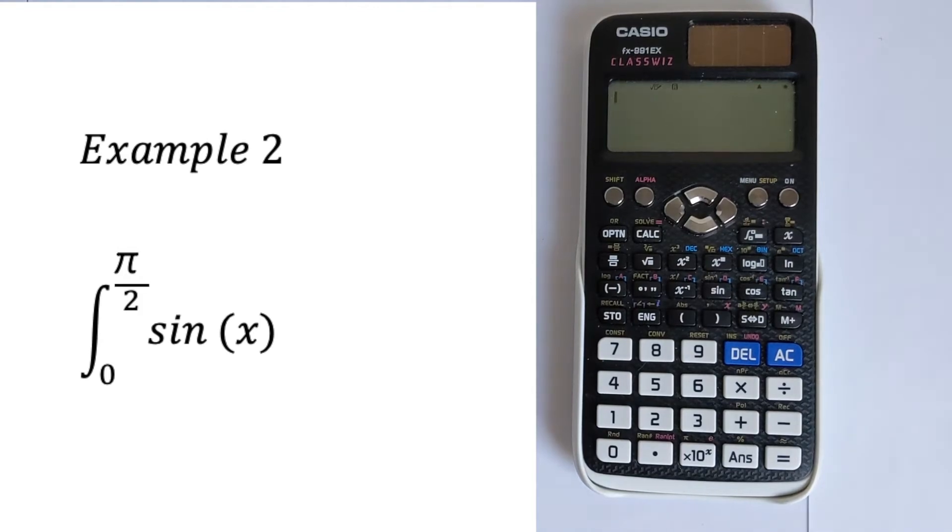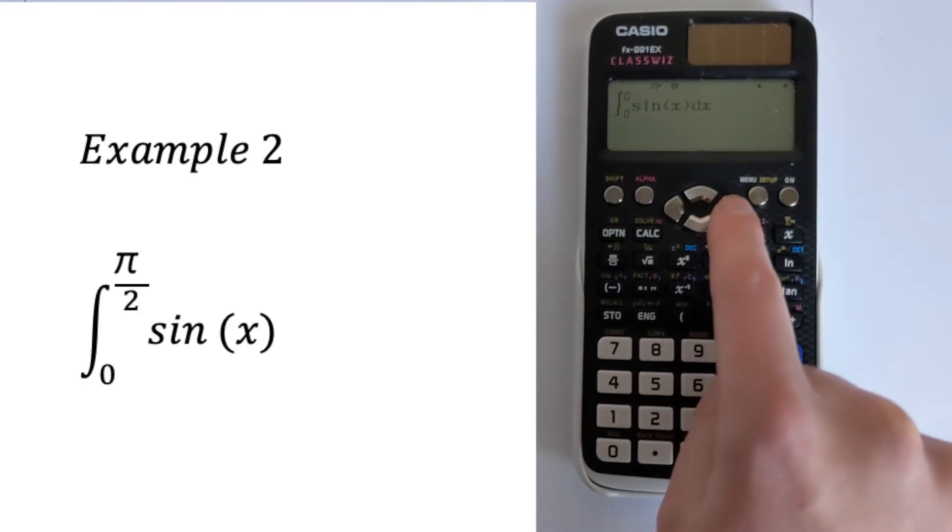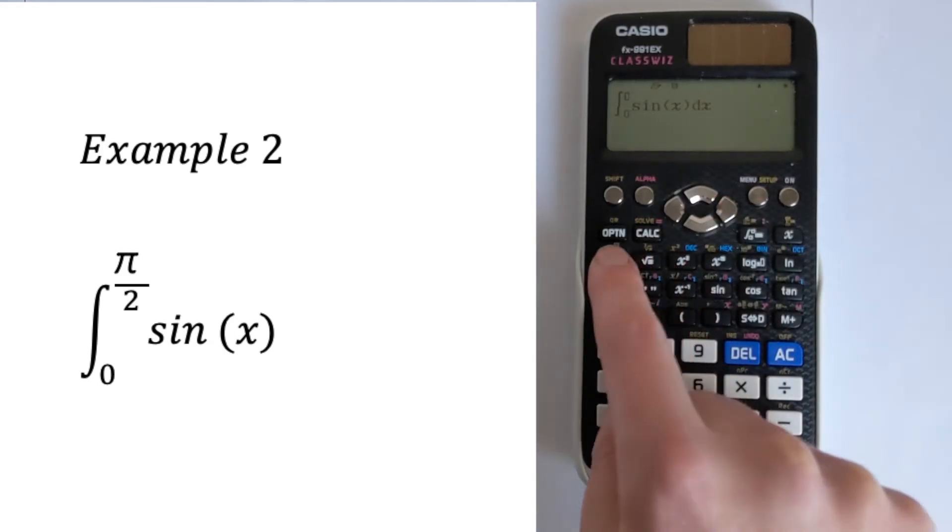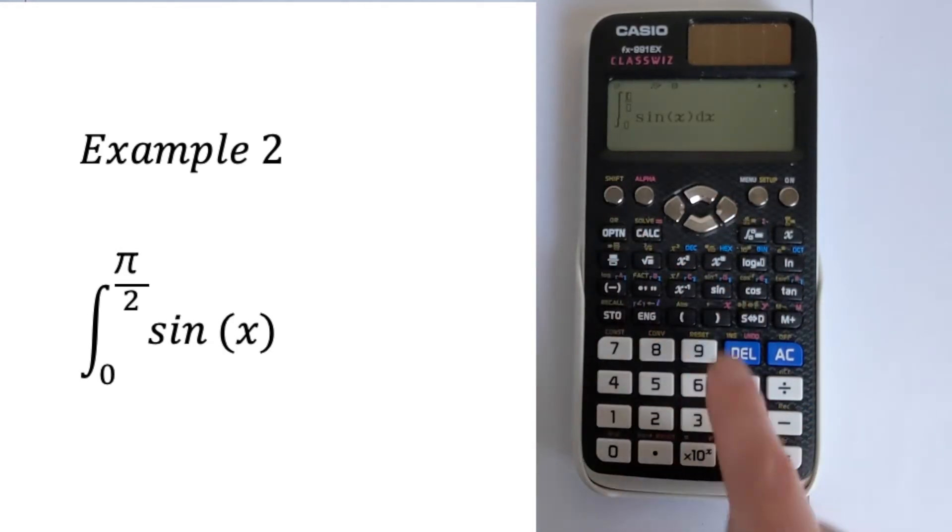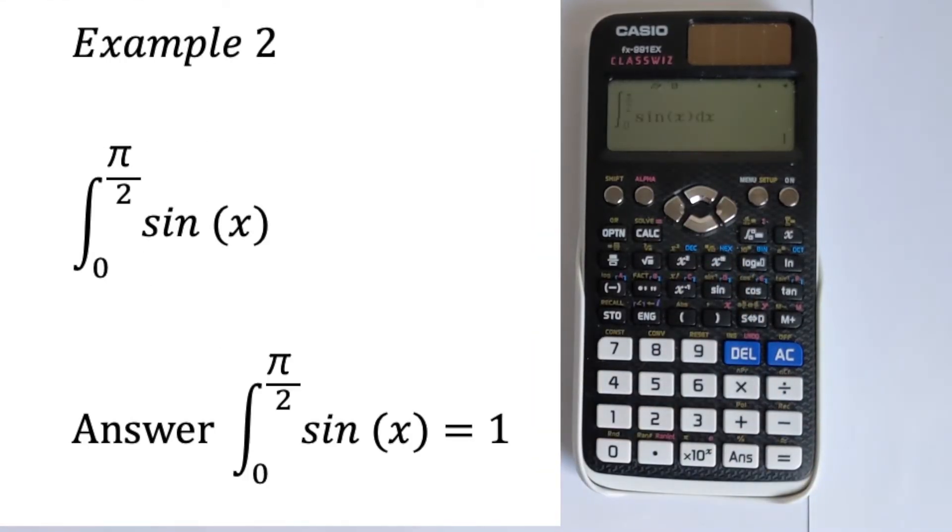So we're going to do integration. We're going to enter sine. And pay attention to the brackets. We'll put an x in there. And then go across and across again. So we're going to go zero. And then here we are going to input shift pi over two and then equals. And that gives you your integral. So that's how you do a trig integral.